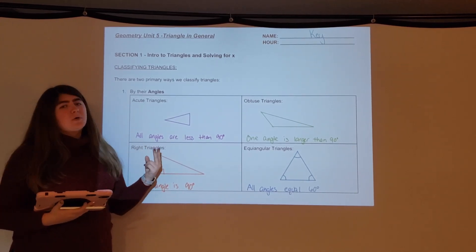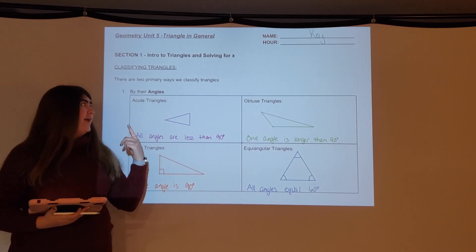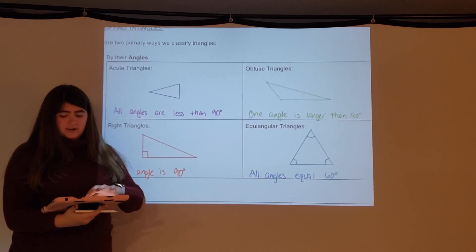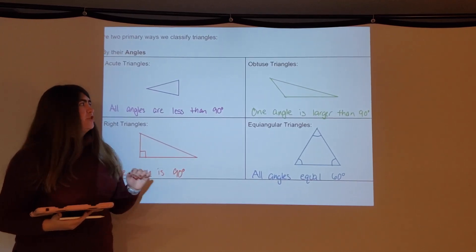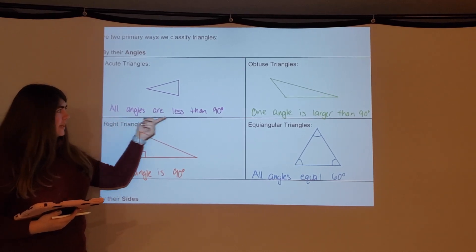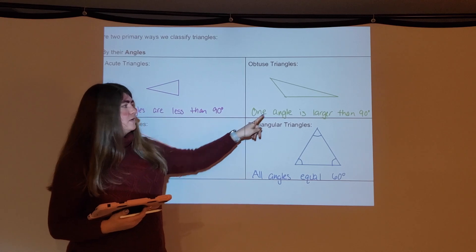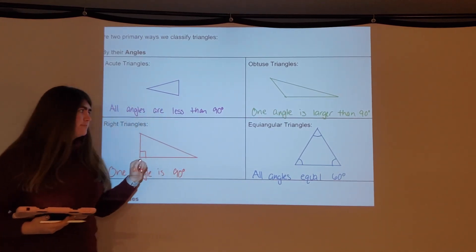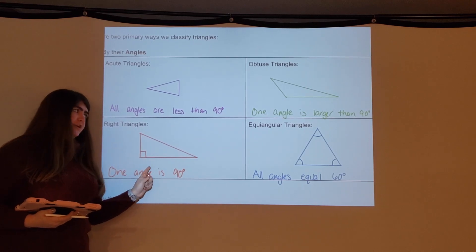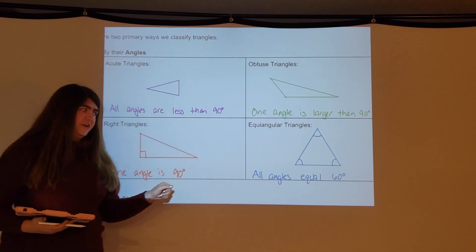We have two primary ways that we classify triangles: by their angles and by their sides. Starting with angles, there are four classifications. Acute triangles, where all angles are less than 90 degrees. Obtuse triangles, where one angle is larger than 90 degrees. Right triangles, where one angle is exactly 90 degrees. And equiangular triangles, where all angles are equal to 60 degrees.